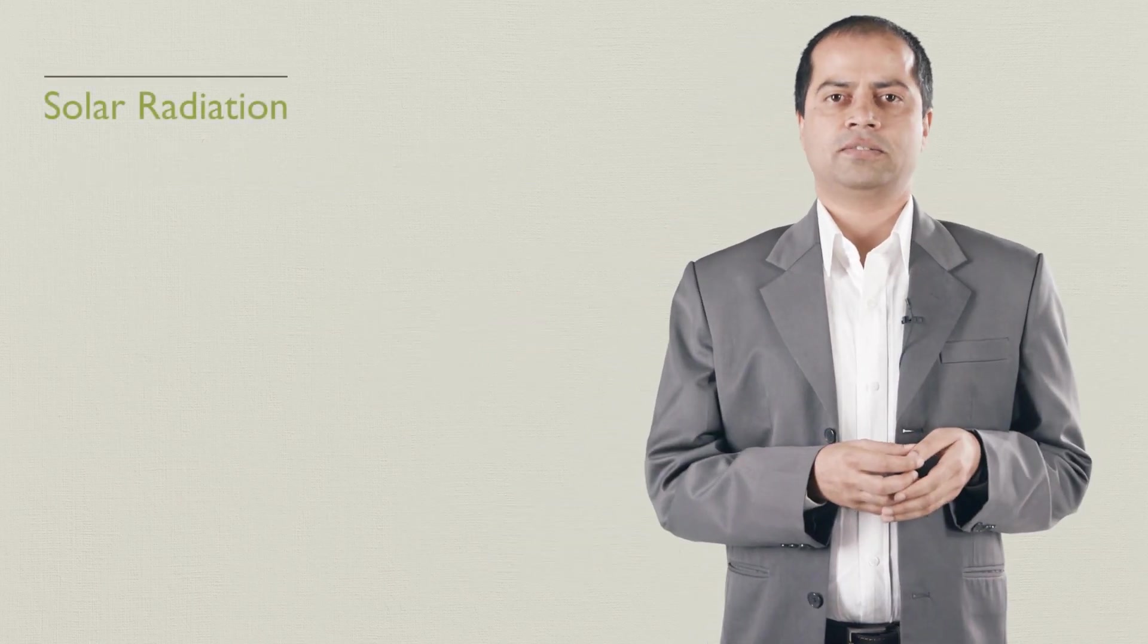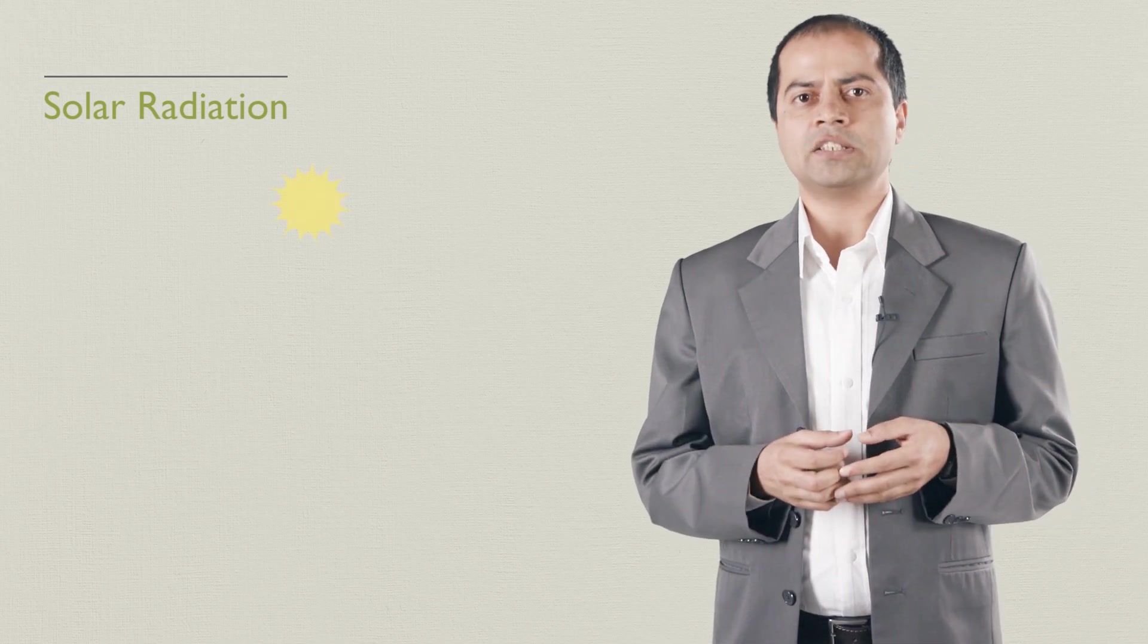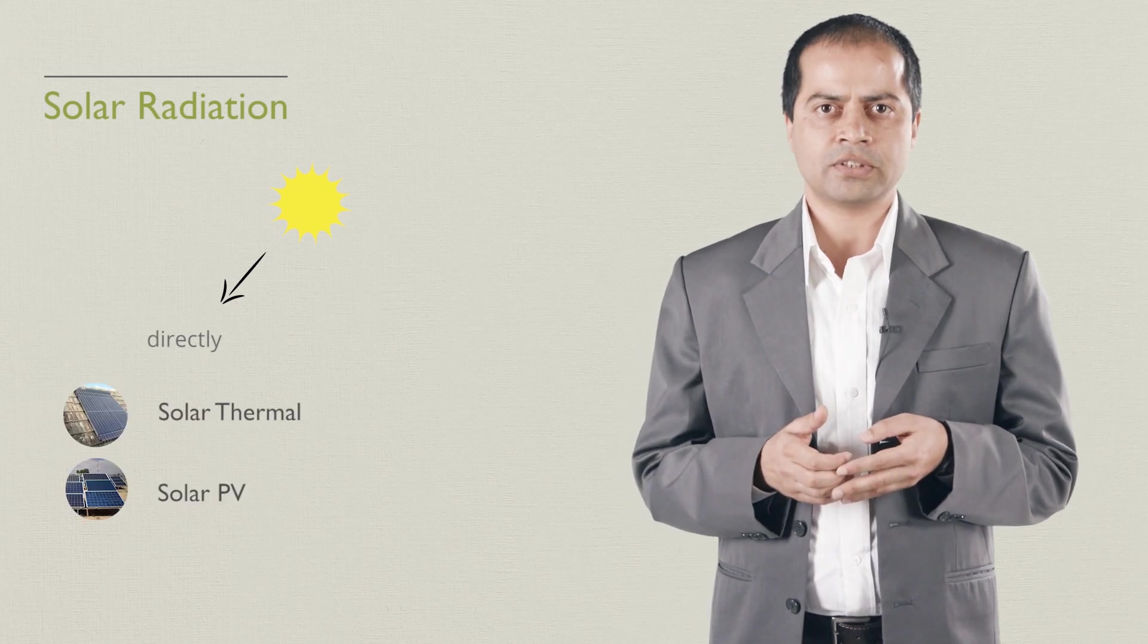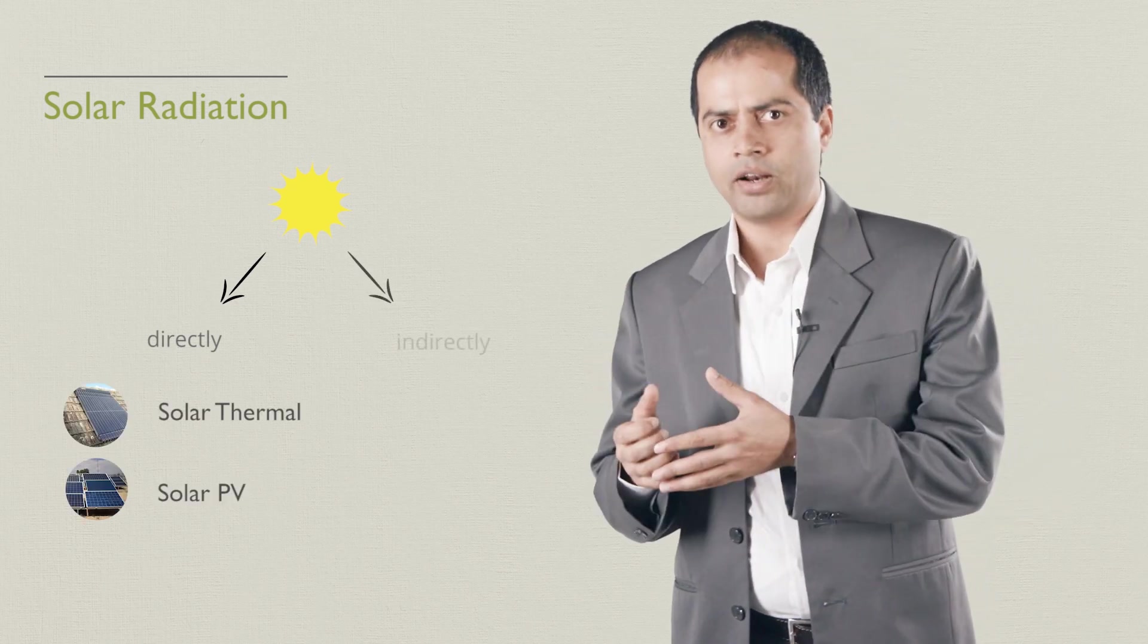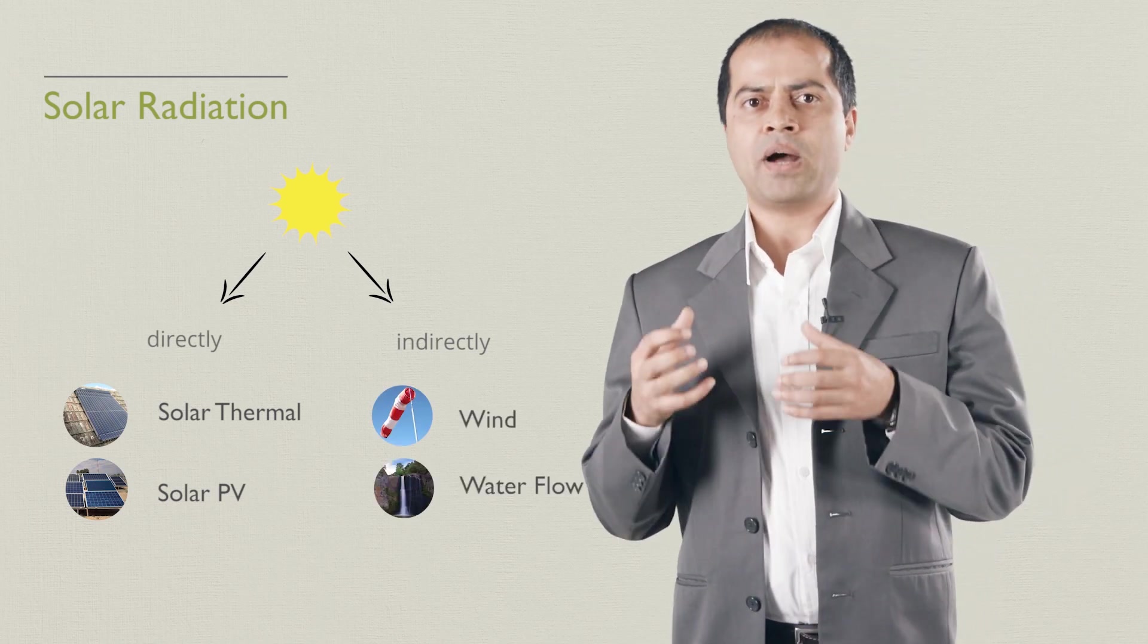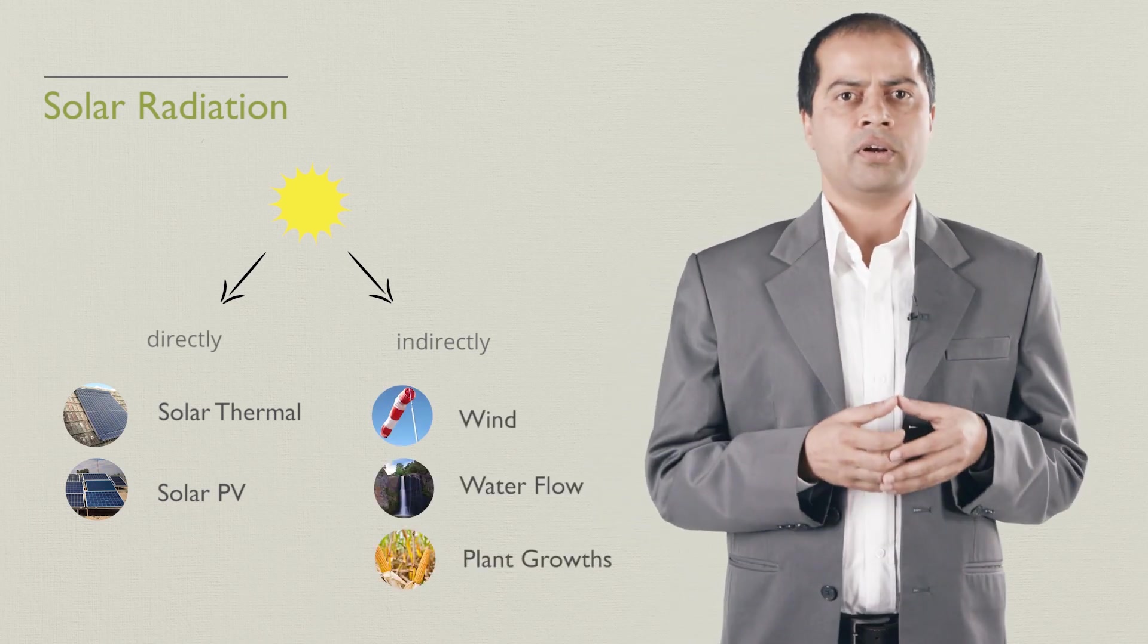Now, let's talk about the solar radiation. Solar radiation can be used directly, for example, solar photovoltaics or thermal systems, or indirectly. Wind, water and biomass are only possible due to the sun. And thus they are indirect use of solar energy.